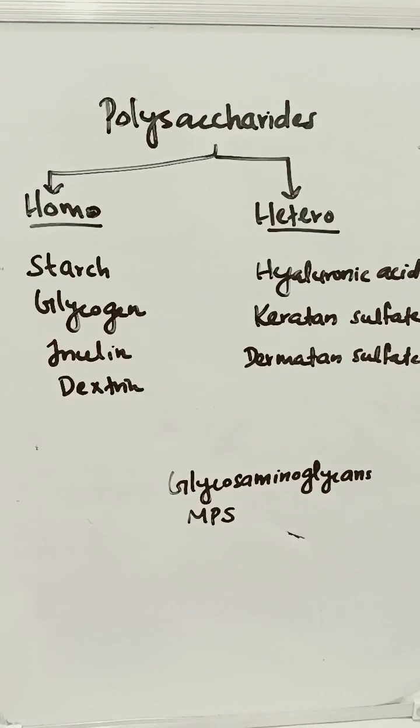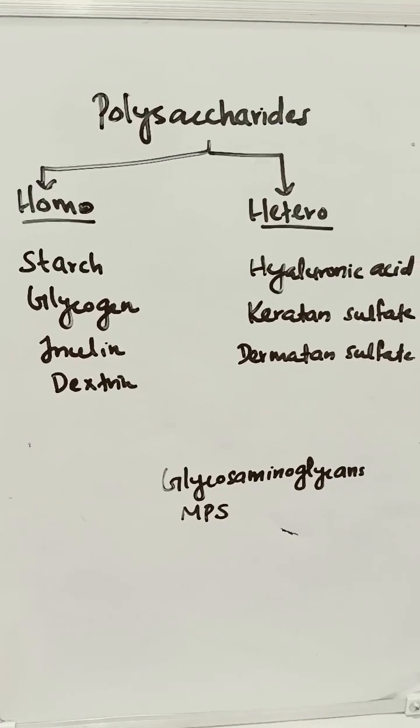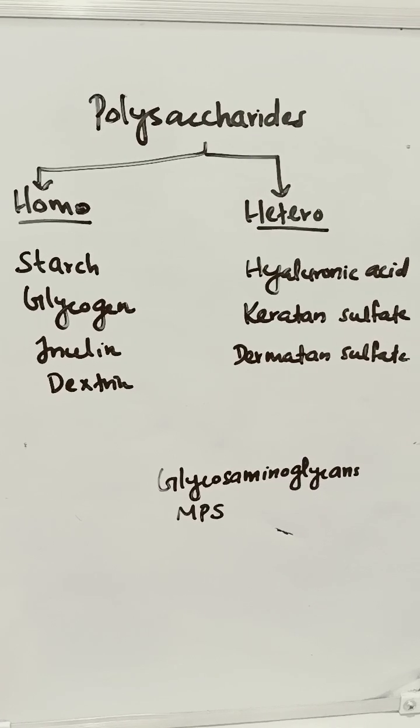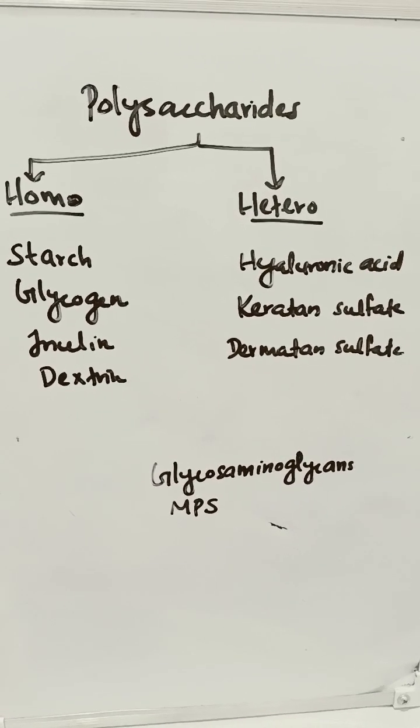Polysaccharides are divided into homopolysaccharides and heteropolysaccharides. Heteropolysaccharides are also known as glycosaminoglycans.